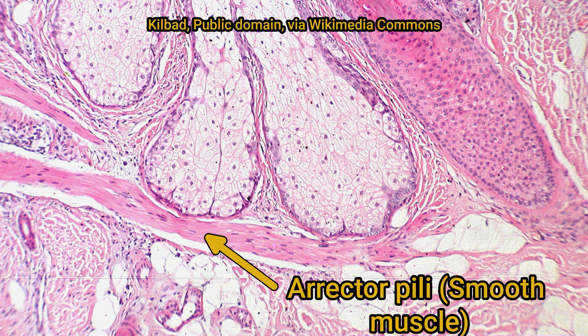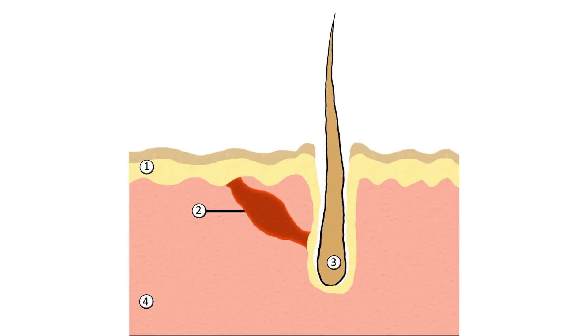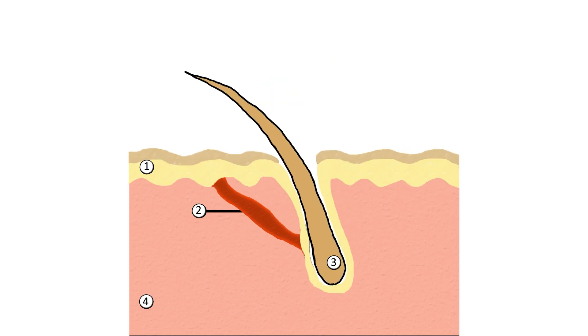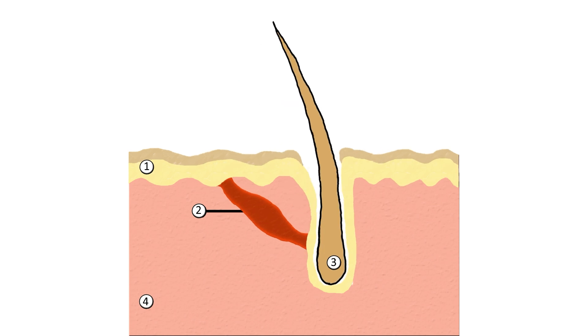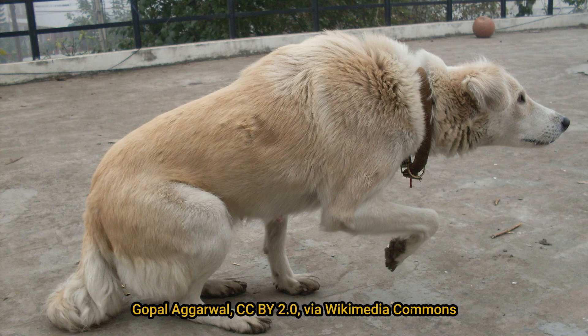Hair follicles can also have smooth muscle associated with them which can alter the position of the hair — this is the erector pili muscle. Contraction will raise the hair and is not under conscious control; mainly this is part of thermoregulation, with hairs trapping a layer of air close to the skin. However, some species such as dogs will raise the thicker guard hairs on their backs and necks as a response to adrenaline, which may communicate fear and anxiety, or be a response to excitement or curiosity.